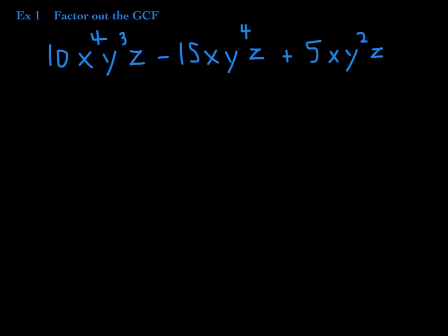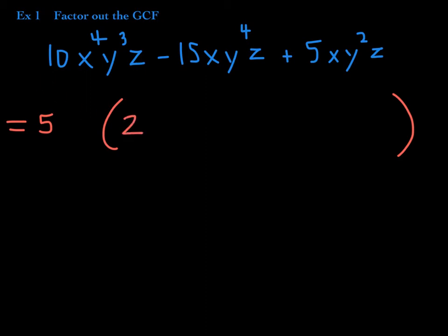This trinomial is equivalent to factoring out a 5. Now focusing on the coefficients: 5 times what gives me 10? 5 times 2. 5 times what is negative 15? 5 times negative 3. 5 times what gives me 5? 5 times positive 1. That's just the coefficients.